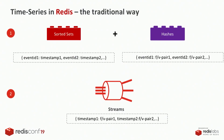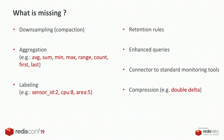When it comes to Redis, today we have two ways of processing time series data. The first one is combining sorted sets with hashes, and the second one is with streams. Both have many gaps in the areas of compaction, aggregation, labeling, retention rules, enhanced queries, and compression.